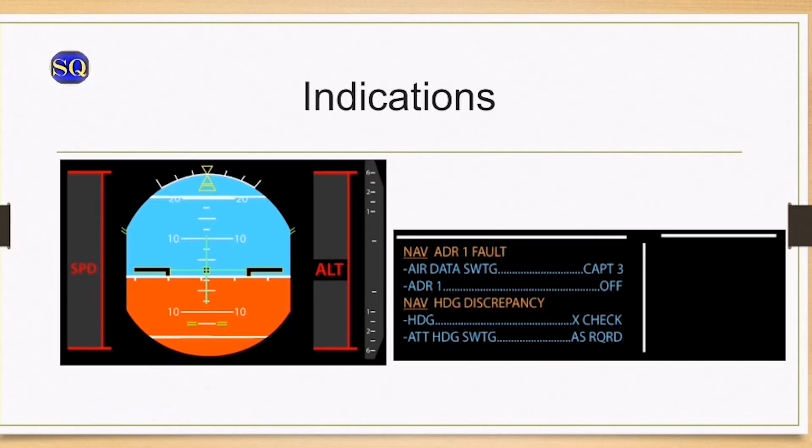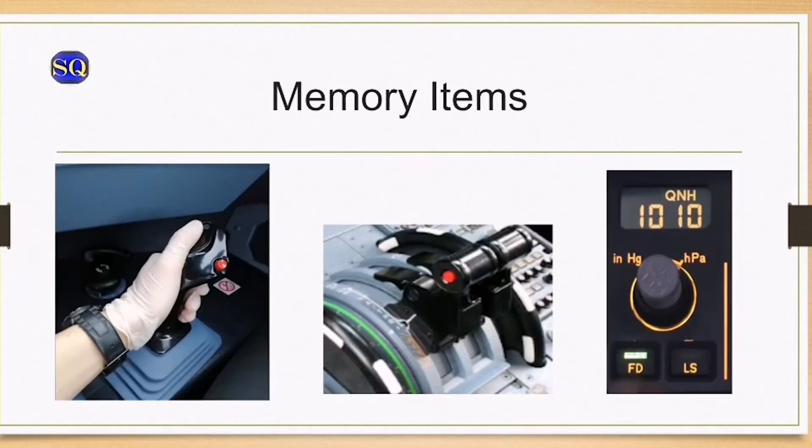Indications to look for: the first indication will be a discrepancy between the captain's PFD, FO PFD, and standby instruments. Okay, let's dive into the memory items. Simultaneously turn the autopilot off, the autothrust off, and the flight directors off. I repeat: simultaneously turn the autopilot off, autothrust off, and flight directors off.